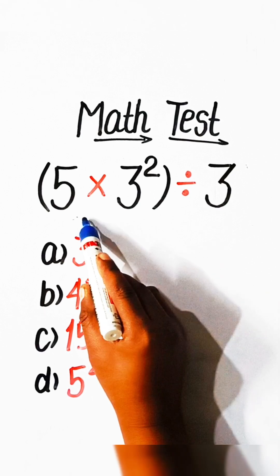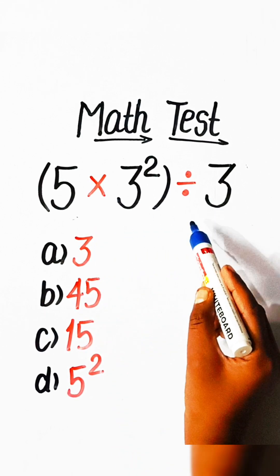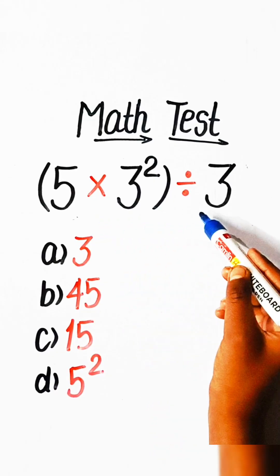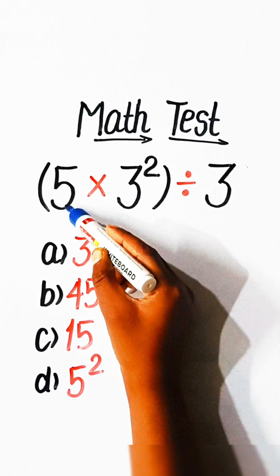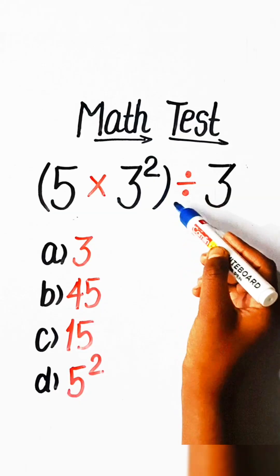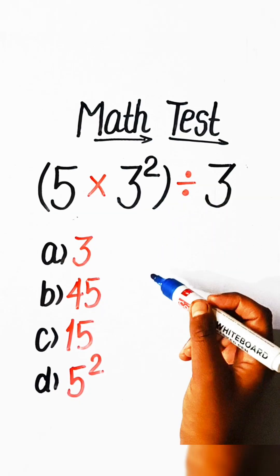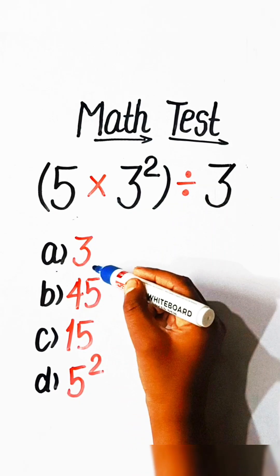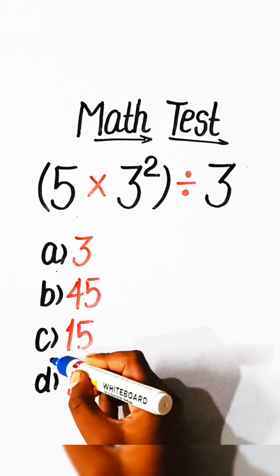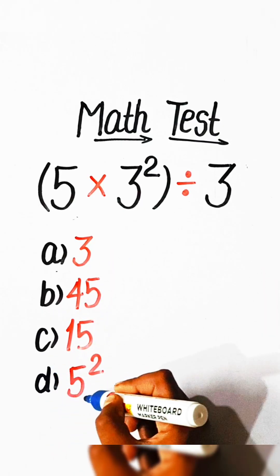Hello everyone. Welcome back to my YouTube channel. In this video, we will solve this basic math equation: 5 multiplied by 3 squared, divided by 3, equals to what? Option A: 3. Option B: 45. Option C: 15. Option D: 5 squared.